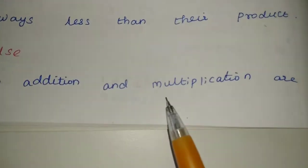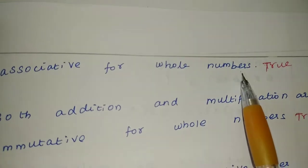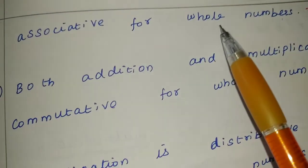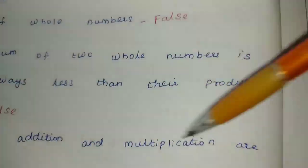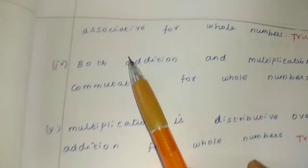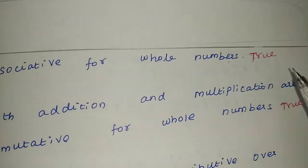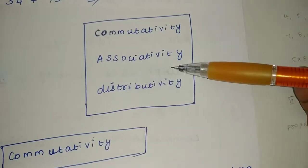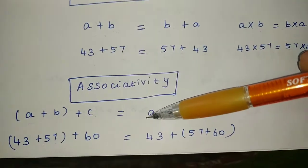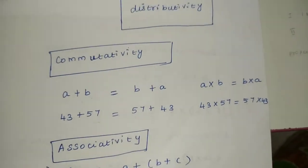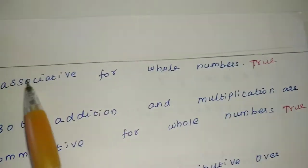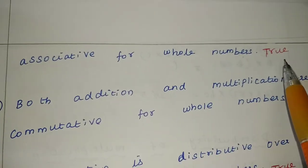Clear? Next, both addition and multiplication are associative for whole numbers. So, addition is associative. Addition and multiplication are associative for whole numbers. Yes. In associativity, we use addition and multiplication. The answer, statement correct, the answer is true.